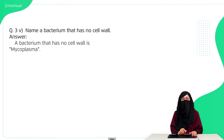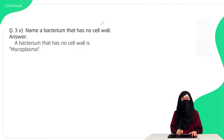Question five: name the bacteria that have no cell wall. Normally bacteria have a cell wall, but the one which has no cell wall is called mycoplasma.